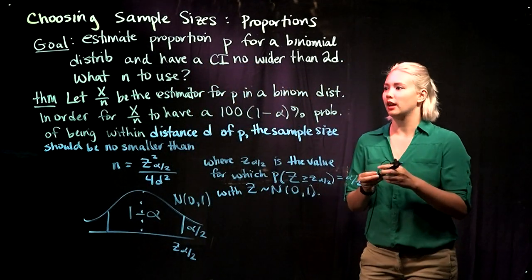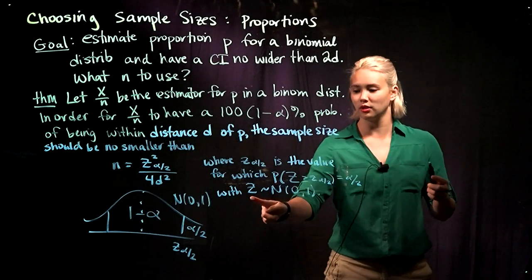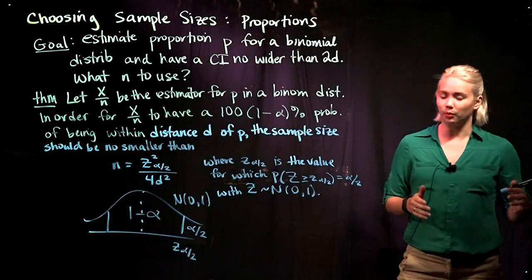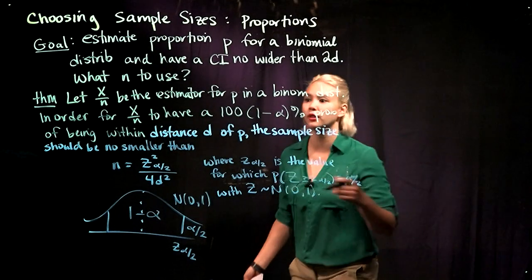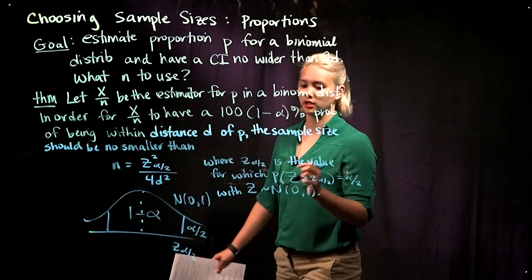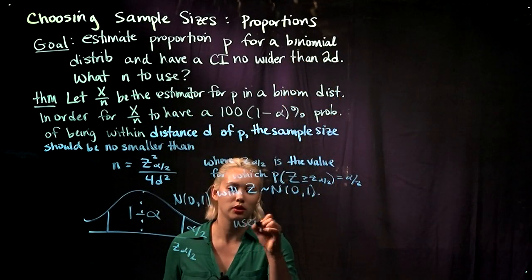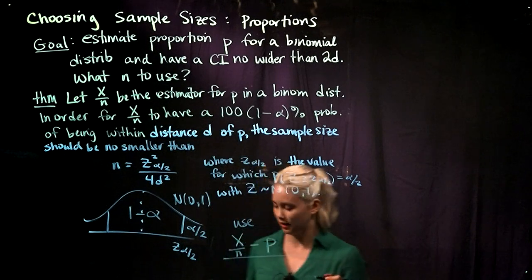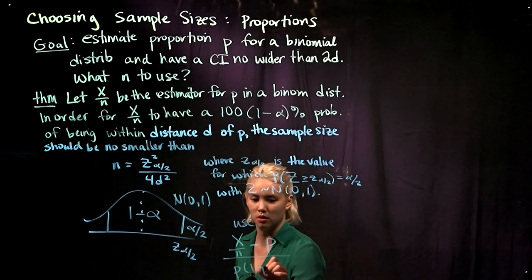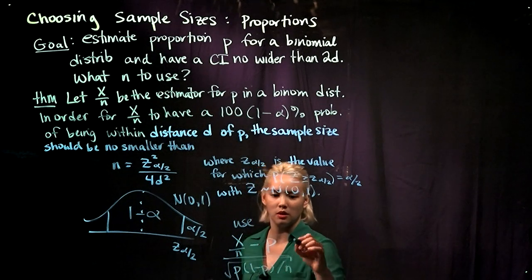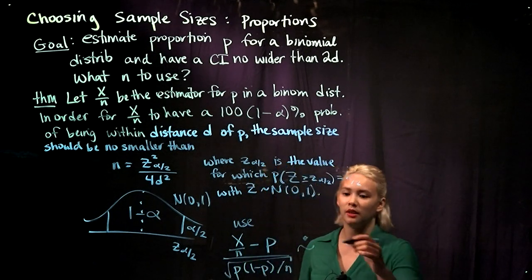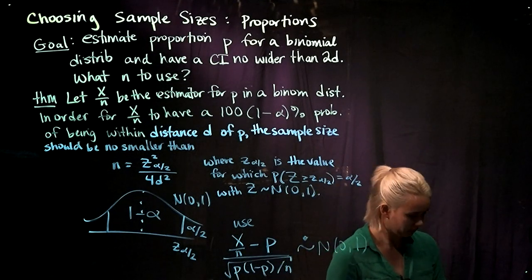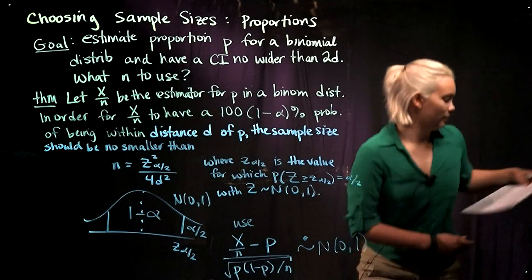To prove this theorem, we'll use Z as a standard normal distribution. A key part of the proof is the distribution of our estimator X over N. We're going to use X over N minus P divided by the standard error, and use the fact that this quantity is approximately a standard normal distribution.